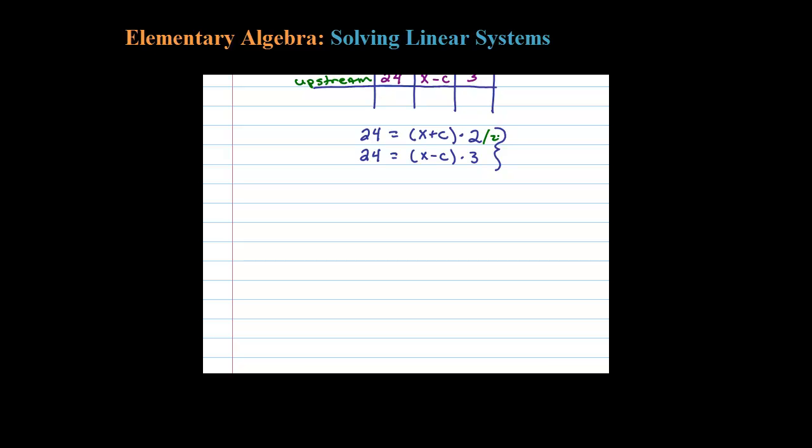I'll divide both sides of the first equation by 2 and both sides of the second equation by 3. This won't always work out so nicely, but here it does. 24 divided by 2 is 12, and the 2s cancel, leaving X plus C. In the bottom equation, 24 divided by 3 is 8, and the 3s cancel, leaving X minus C.